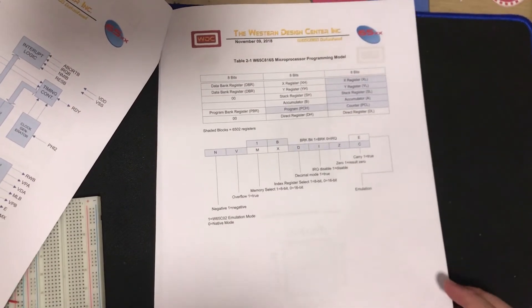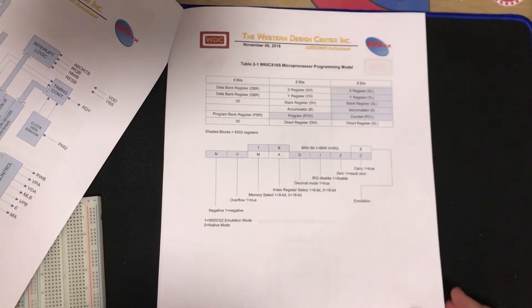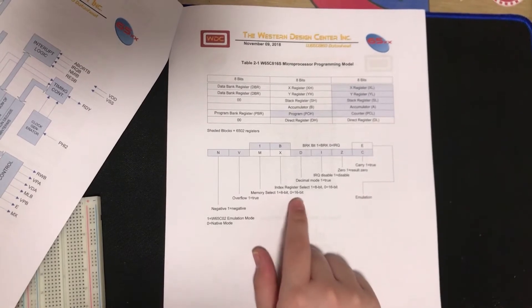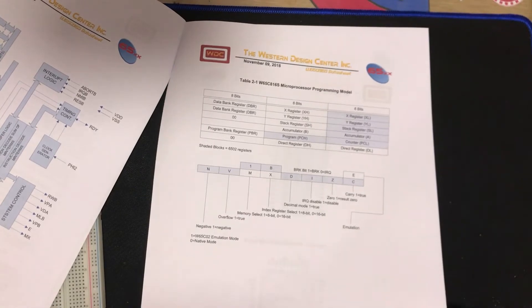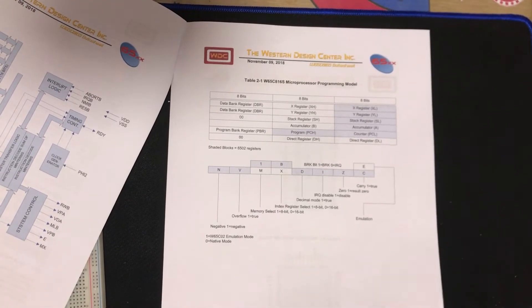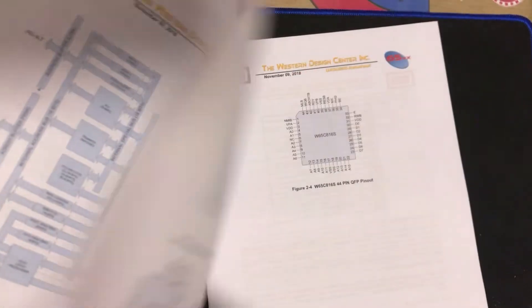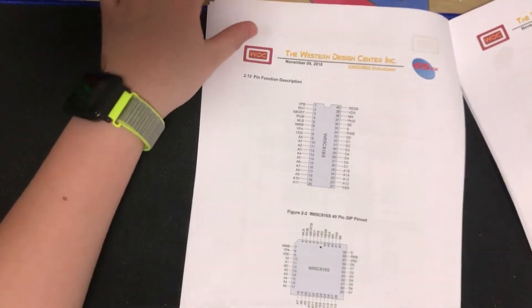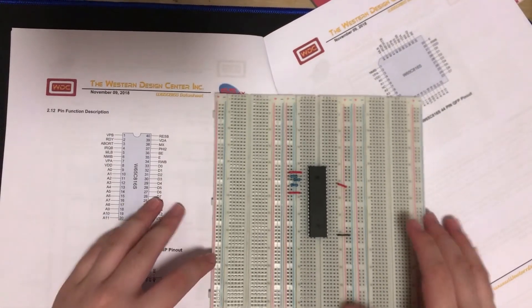The M is the memory select. This basically means we're either addressing 8-bit memory or 16-bit memory. So 1 is 8-bit and 0 is 16-bit, but we'll care about that later. Index register select is for the X and Y registers. That basically says, okay, these registers, do they need to be 8-bit or do they need to be 16-bit? But on this particular pin on the microprocessor, this is an output pin. We don't really need to care about that unless we need it for some debugging.